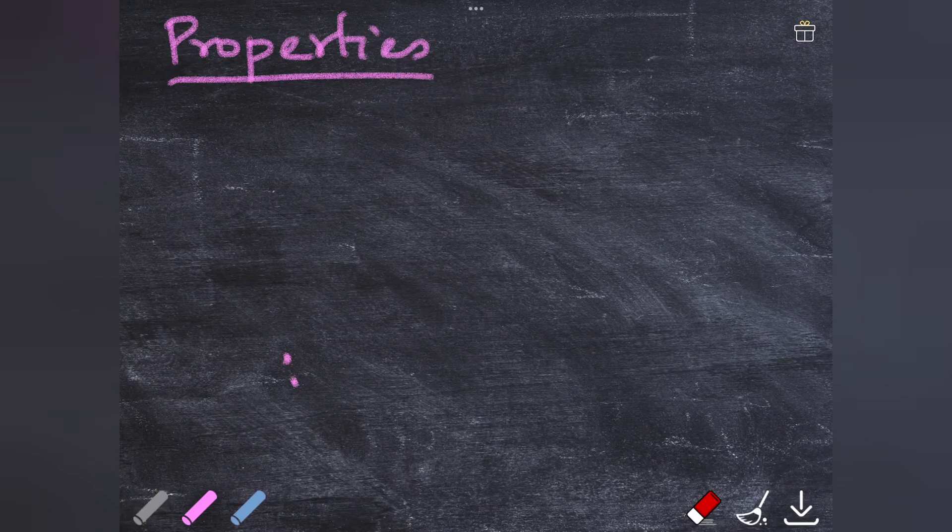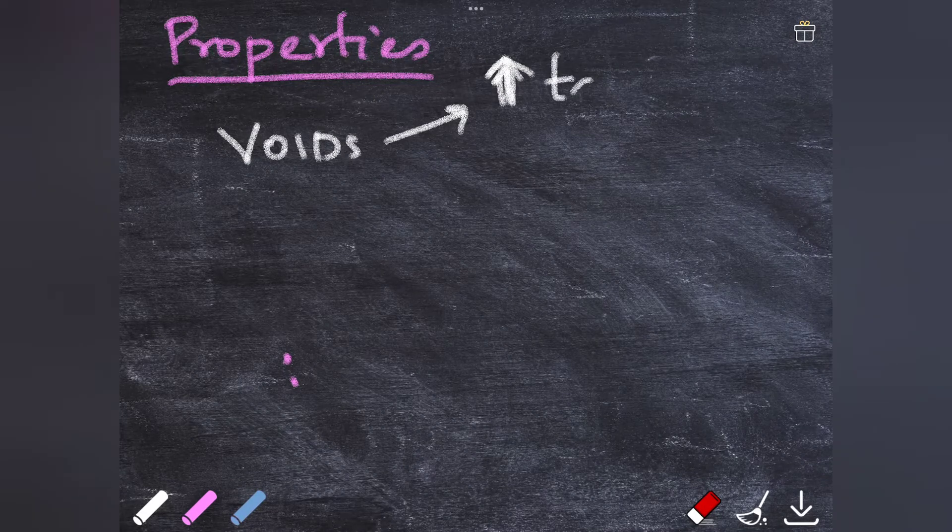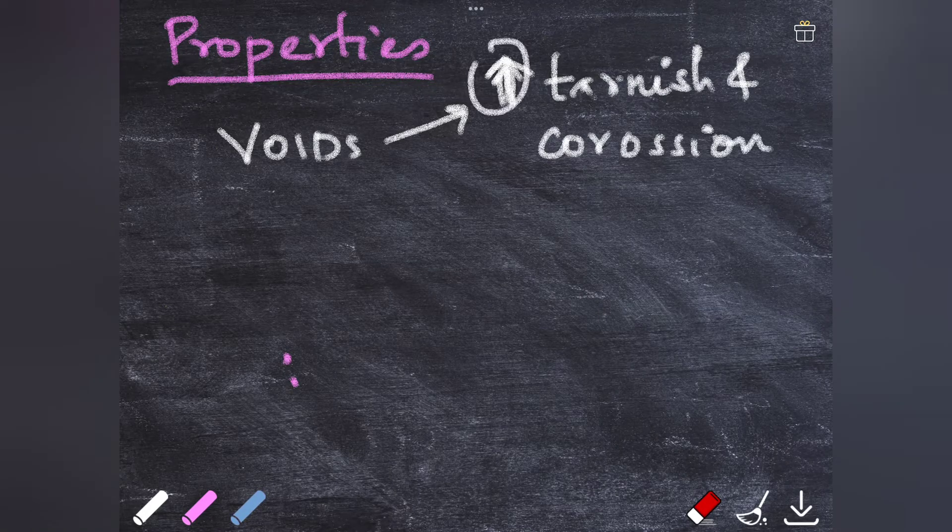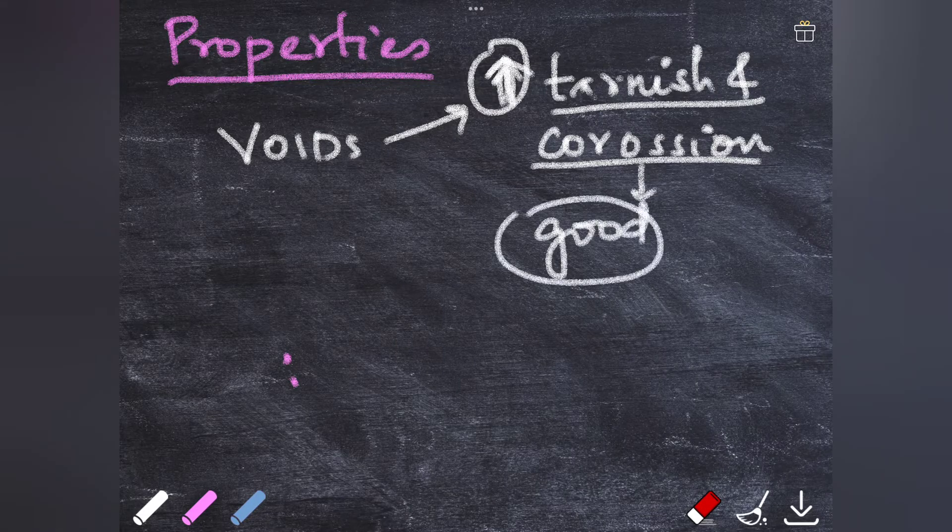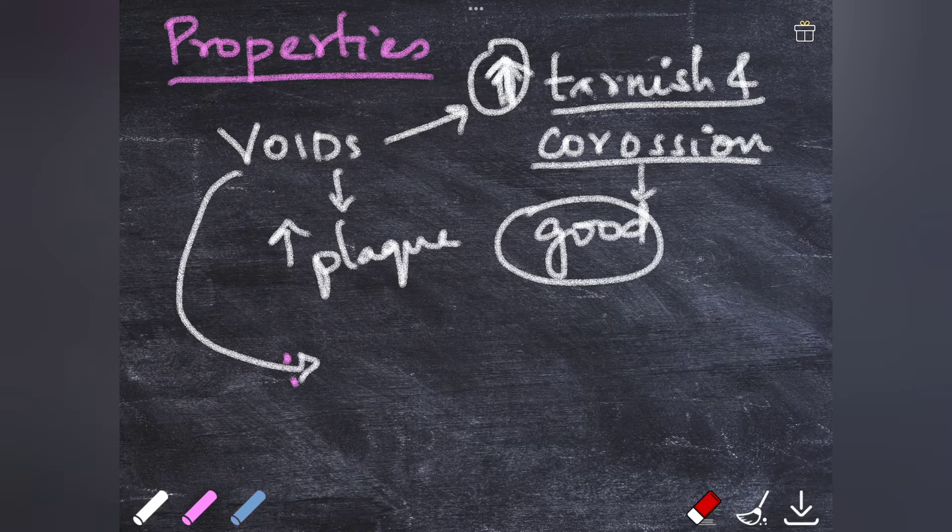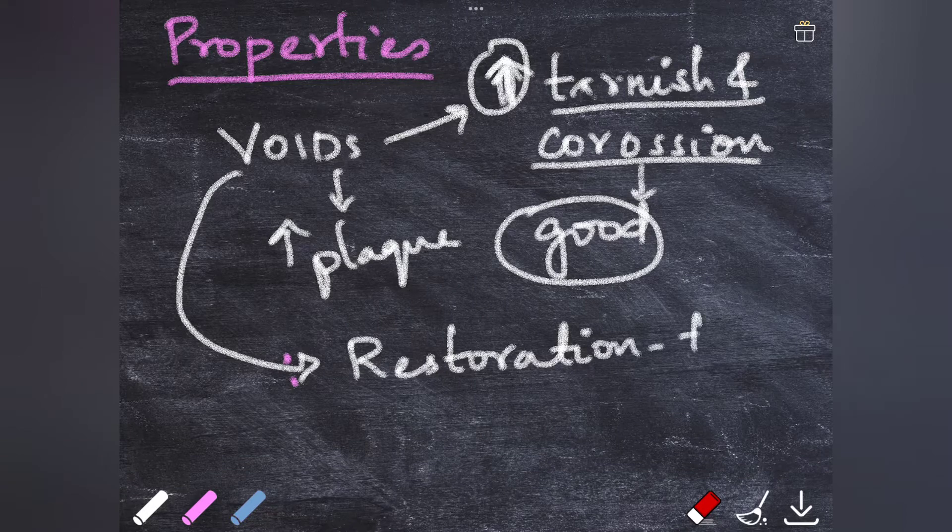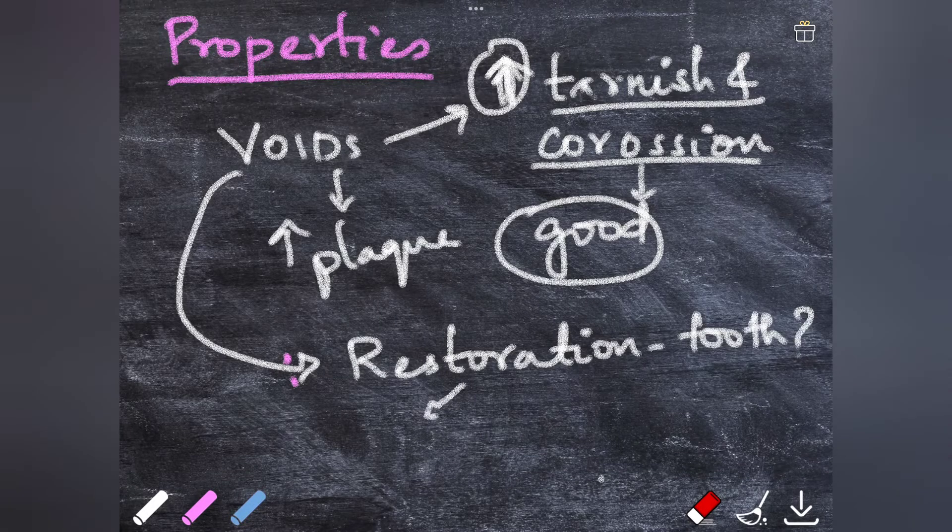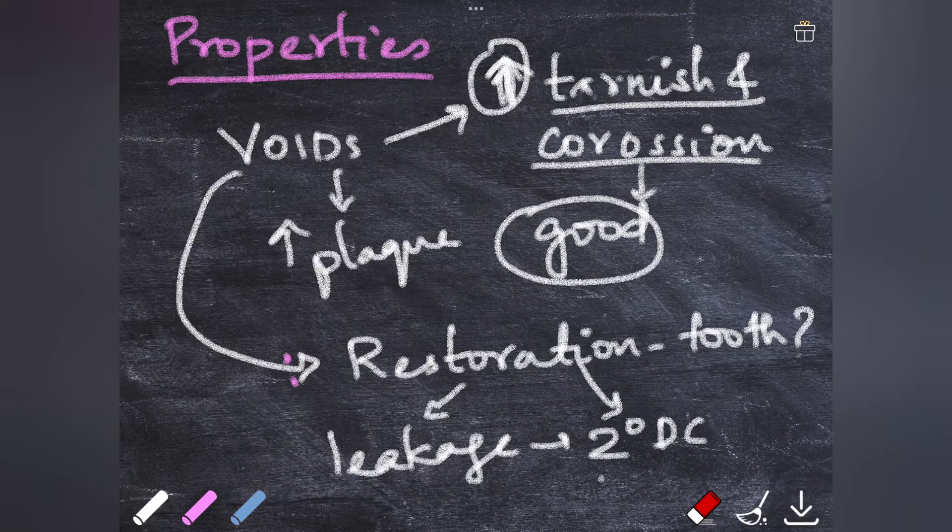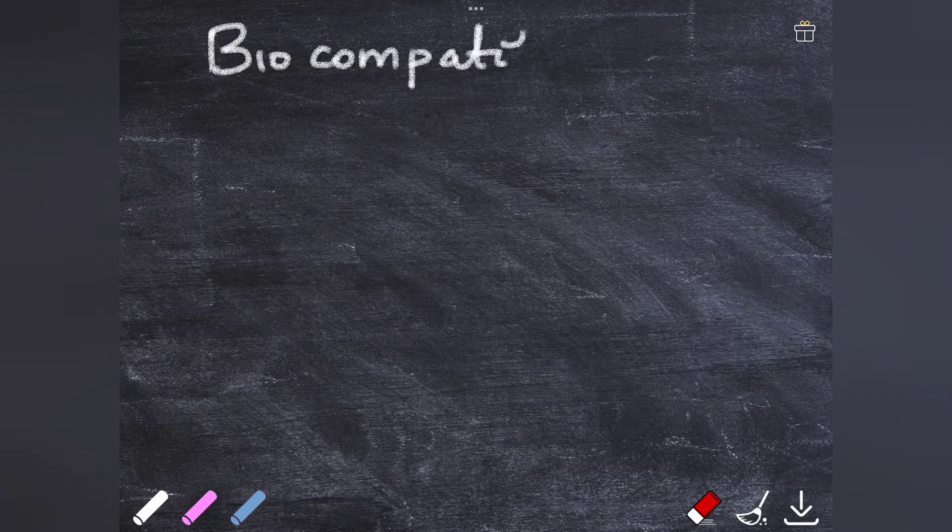Now I kept talking about voids, so what are these voids going to do to the gold restoration? The first and foremost thing is that they are going to increase the incidence of tarnish and corrosion. However, the degree of tarnish and corrosion resistance is good if it is compacted properly. The voids are also going to increase plaque retention.